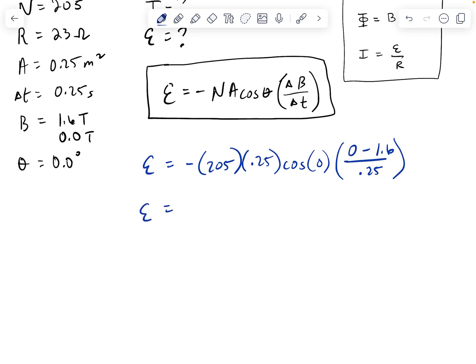All right, so at this point, we can plug this all in our calculator. So negative 205 times 0.25 times the cosine of 0 times basically negative 1.6 divided by 0.25. And so we get 328 volts for epsilon for our electromagnetic field.